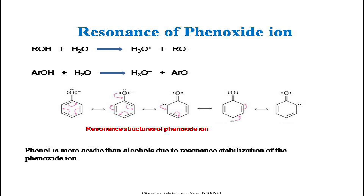The oxygen lends one of its lone pairs to the ring, and the double bonds change their positions, distributing the negative charge across the ring at multiple positions. These are the resonating structures of the phenoxide ion. Due to these resonating structures, phenols are more acidic than alcohols because the phenoxide ion is stabilized by resonance. There is no such resonance in alcohols, which is why alcohols are less acidic than phenols.